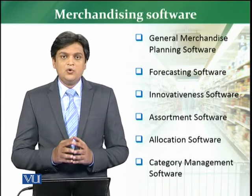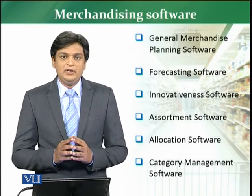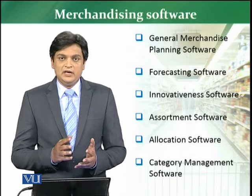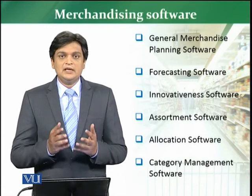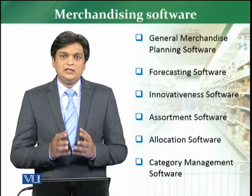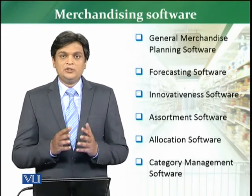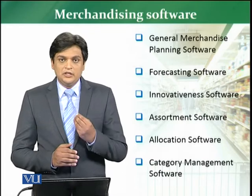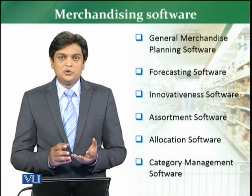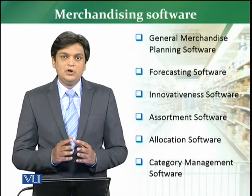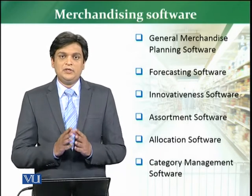This software enables a retailer to determine how much assortment a store should carry given a specific square footage or square meter area. For example, if a store has 10,000 square feet, the software shows what assortment the store should carry based on the goods and general merchandise being planned. It gives you a complete assortment package showing what is most profitable and useful from the customer's perspective.